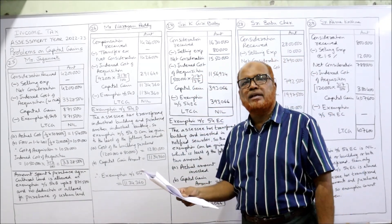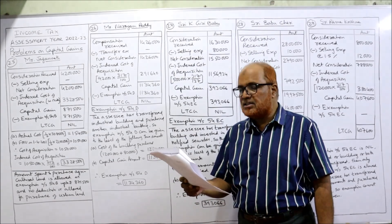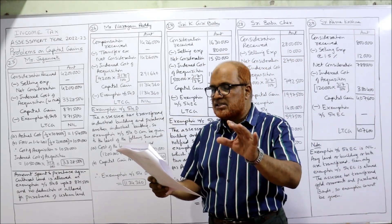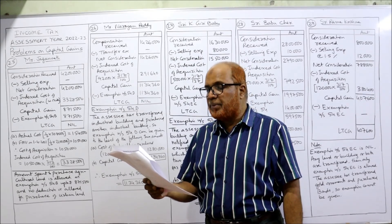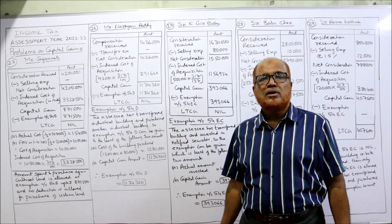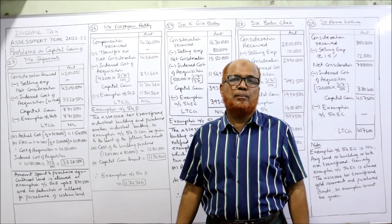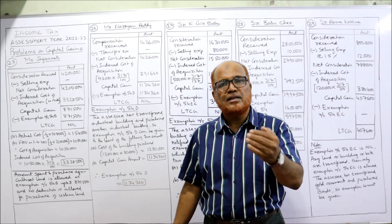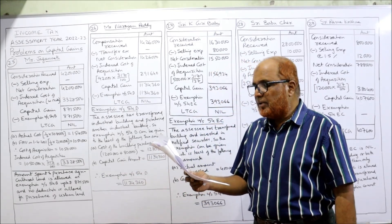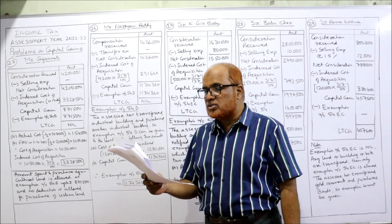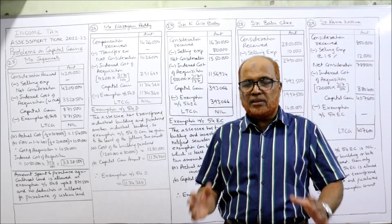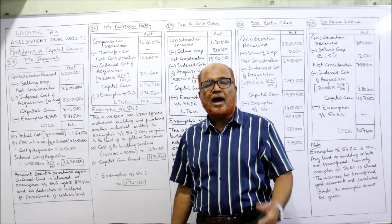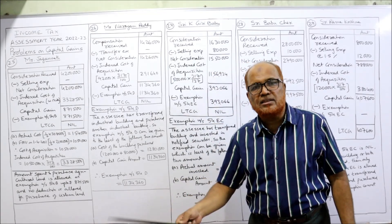Now problem number 26. Mr. Narayan Reddy has been owning a building since 1/5/1982 and using it for industrial purpose. The cost of the building is 92,000. During the previous year, the state government acquired the building by passing an ordinance and paid 14 lakh 26,000 as compensation. The government compulsorily acquired the building — in many cases there is compulsory acquisition by the government, and whatever compensation is received is also taxable as a transfer of an asset. Immediately he purchased an old building for industrial purpose for 12 lakh and spent 80,000 on its renovation.